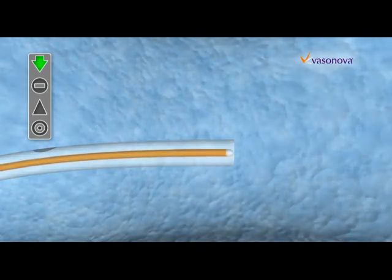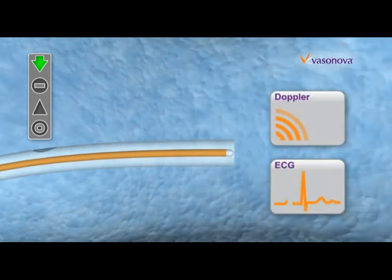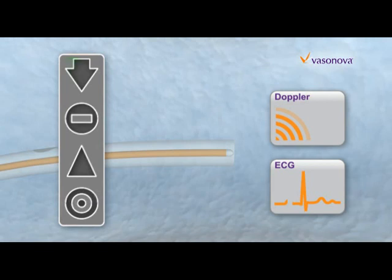The stylet captures and measures real-time internal physiological parameters. The data is transmitted to a console where visual indicators guide the clinician as the catheter is advanced through the vasculature.